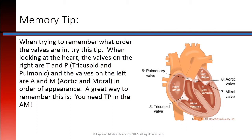When trying to remember what order the valves are in, try this tip. When looking at the heart, the valves on the right are T and P for the tricuspid and pulmonic, and the valves on the left are A and M for aortic and mitral, in order of appearance. A great way to remember this is: you need TP in the AM.